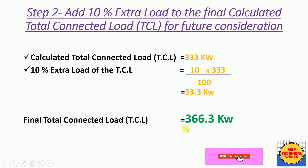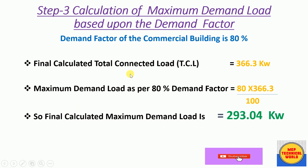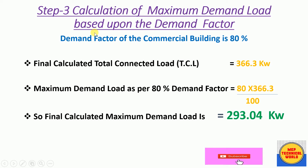In Step 3 we calculate the maximum demand load based upon the demand factor. Demand factors differ by building type: for a commercial building it is 80%, for a residential building it is 60%, and for an industrial building it is 90%. Since our hotel building is a commercial building, we will use a demand factor of 80%.